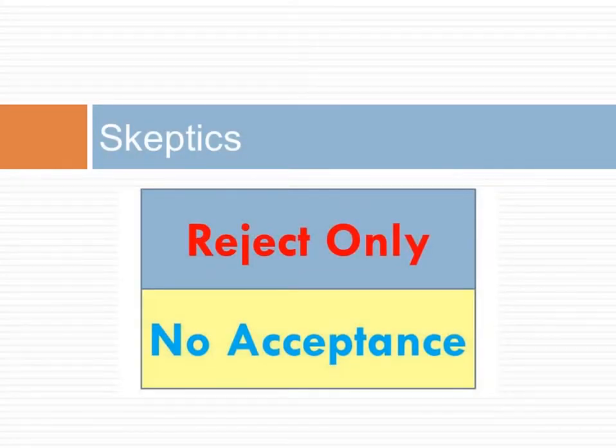In statistics, we do not accept the hypothesis. That requires us to know that all alternative hypotheses have been rejected. We only reject some hypothesis without accepting another. The rejection of the null hypothesis is not necessarily acceptance of the alternative.